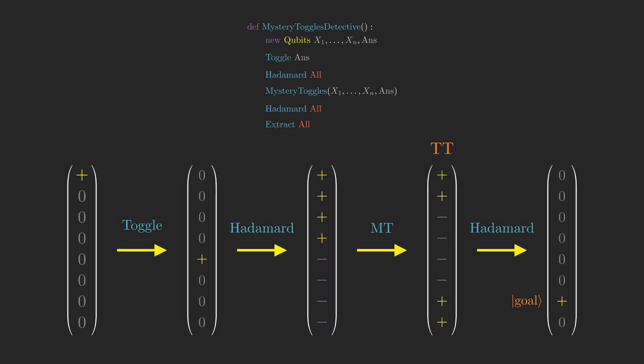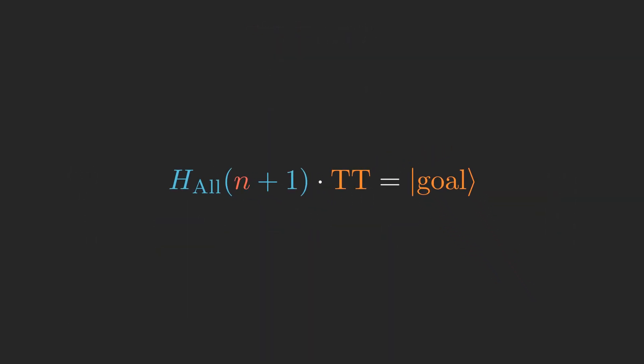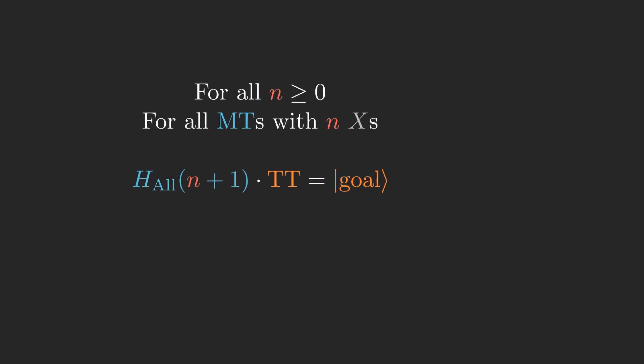Ultimately, we want to show that if we do hadamard all from the truth table state of mt, then the qubits end up in the goal state of mt, and we want to show that for any number n of x's and all possible versions of Mystery Toggles mt with n x's. The way I came up with the proof uses induction.